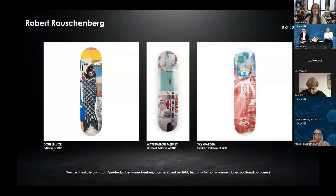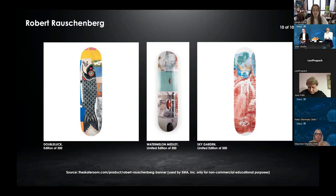The Skate Room is a B Corp started in 2014 that brings together art, skating, and social entrepreneurship. These are three of the six Rauschenberg skateboards made in conjunction with the Robert Rauschenberg Foundation that pays tribute to his legacy. There were 300 skateboards of each piece made as limited edition boards, all of which have since sold out. The Skate Room has also highlighted artists like last week's Basquiat, Keith Haring, Jeff Koons, Van Gogh, and others.